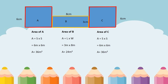Since we have the area of A, area of B, and area of C, we are going to add them together to get the total area of this irregular figure. Total area equals area of A plus area of B plus area of C. We have 36 square meters plus 24 square meters plus 36 square meters, which is equal to 96 square meters as the total area of this irregular figure.